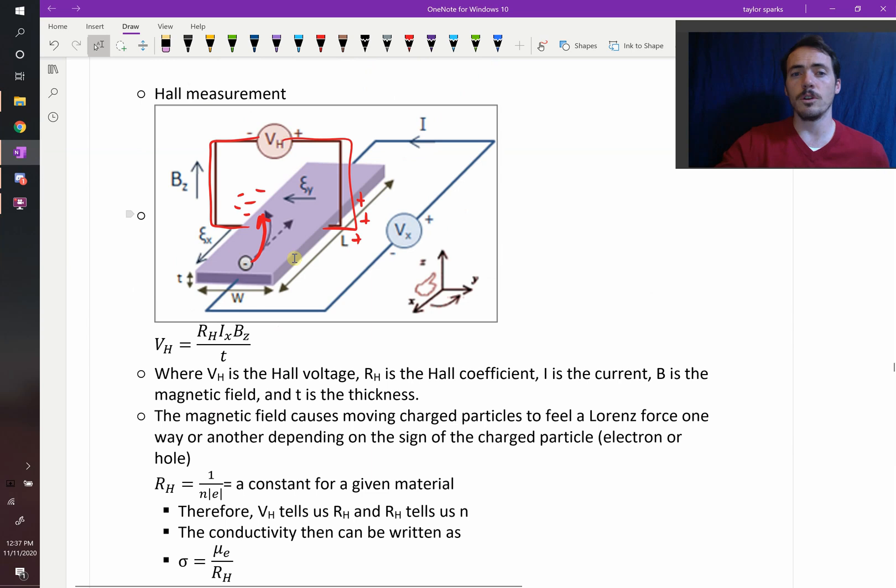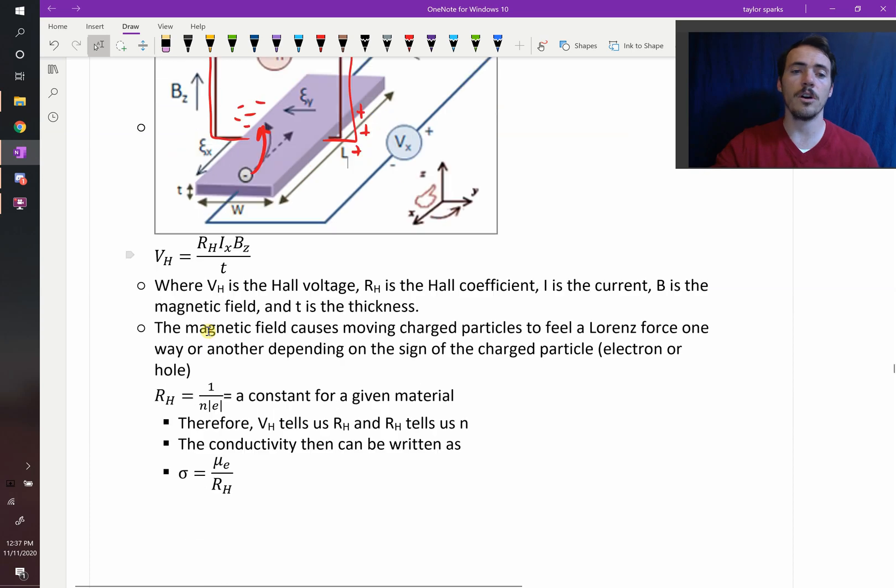And from the Hall voltage, if you know how thick your sample was and the strength of your magnetic field, you can then calculate your Hall coefficient. And from your Hall coefficient, you can calculate your N, your carrier concentration.